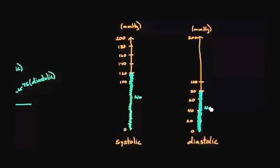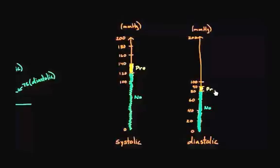Now, if my systolic blood pressure was between 120 and 140, I'm in the yellow zone. That yellow zone means I don't have hypertension yet, but I'm getting there — this would be pre-hypertension. On the diastolic side, we use 90 as a cutoff. Anything between 80 and 90 would be in that yellow pre-hypertension zone.